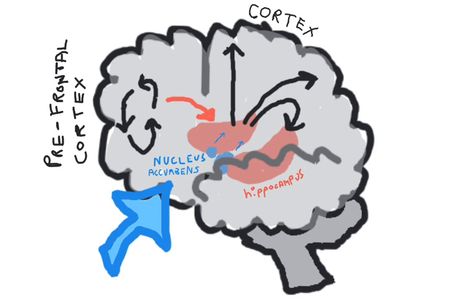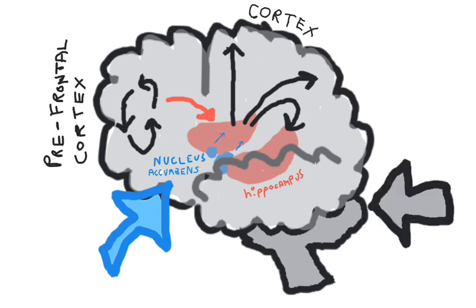Now, this is just one area of interest. The cerebellum has also been implicated in the development of autism spectrum disorder, but that's going to be a topic for another day.